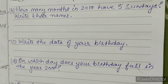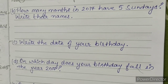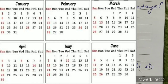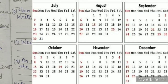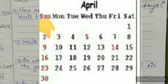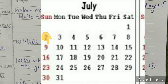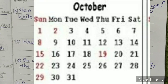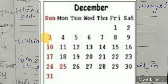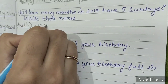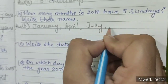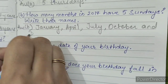B. How many months in 2017 have 5 Sundays? Write their names. Looking at the calendar of 2017, the months with 5 Sundays are: January, April, July, October, and December.